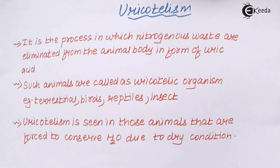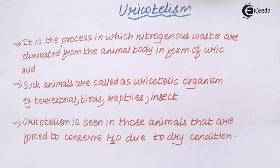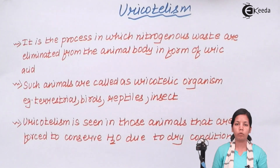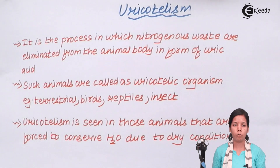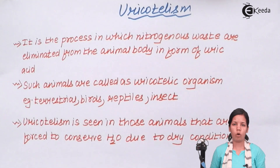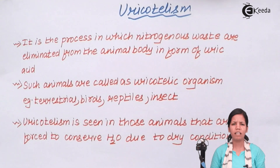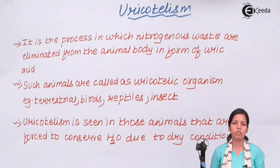Uric acid is a semi-solid form of waste material, and it is sometimes crystalline. Now, 10 ml of water would be needed just to dissolve or remove 1 gram of uric acid from the body of these terrestrial organisms. The cost of water required in ammonotelism — to remove ammonia or urea — is not as great as it is for uric acid; less amount of water is required. But still, these organisms need to save a lot of water.